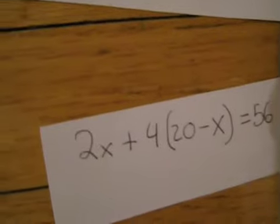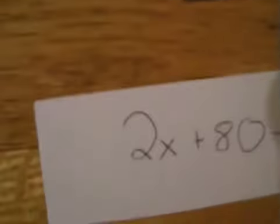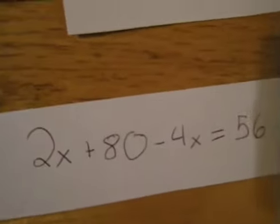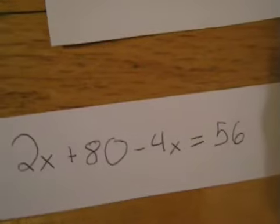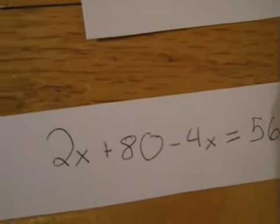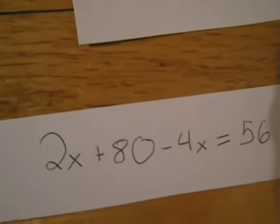The 4 comes in and multiplies to 20 and the X, giving us 2X plus 80 minus 4X equals 56. We add our like terms, and you get 80 minus 2X equals 56.